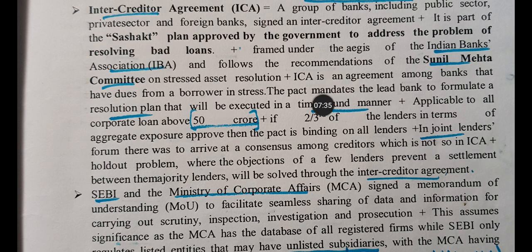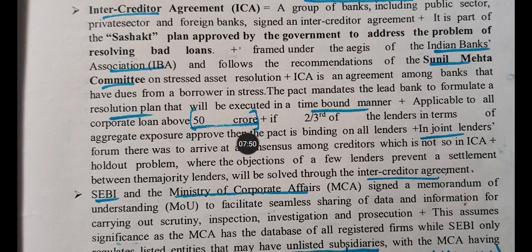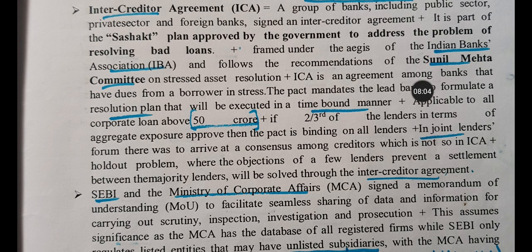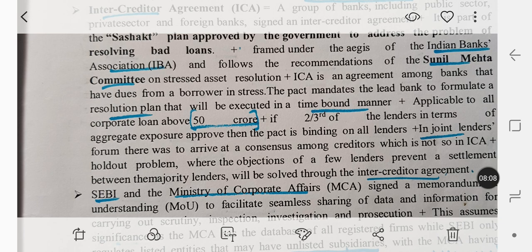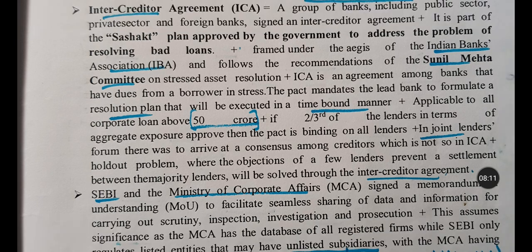The intercreditor agreement is an agreement among banks that have dues from a borrower under stress. The pact mandates the lead bank to formulate a resolution plan that will be executed in a time-bound manner. It is applicable to all corporate loans above 50 crore — that threshold is very important.